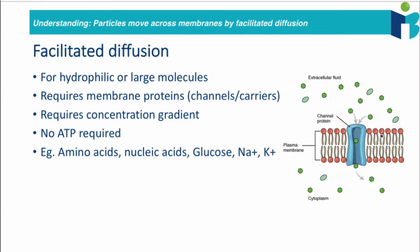On top of this, the particles have to be able to move through what's called a channel protein. These channel proteins are kind of like tunnels which allow the higher concentration solute to move down its concentration gradient to the other side of the plasma membrane. The reason why you need a channel protein for facilitated diffusion whereas you didn't for simple diffusion is due to the nature of these solutes. These molecules are typically going to be hydrophilic, i.e. attracted to water, or quite large, and these two properties mean that the particles cannot squeeze in between the phospholipid bilayer.